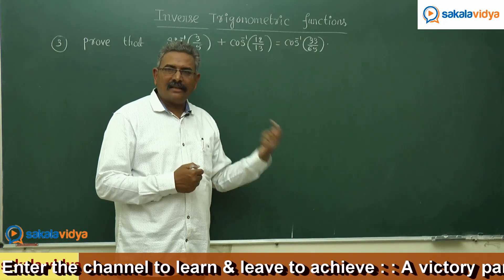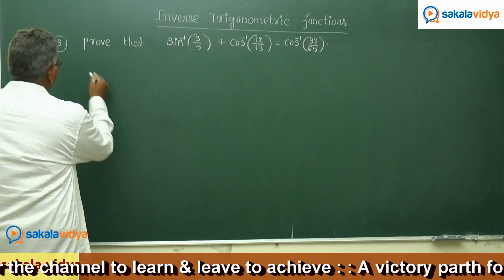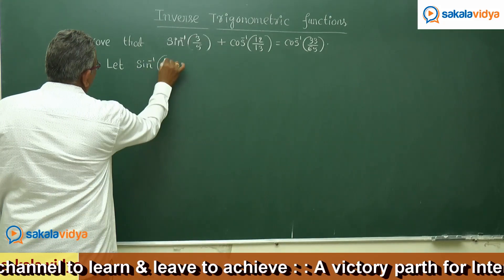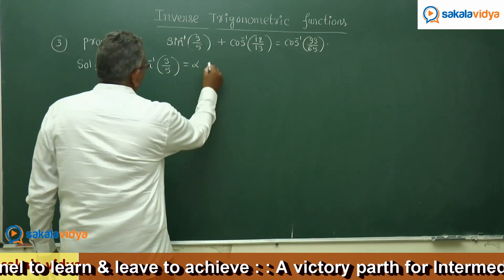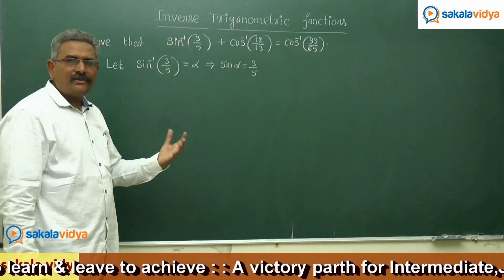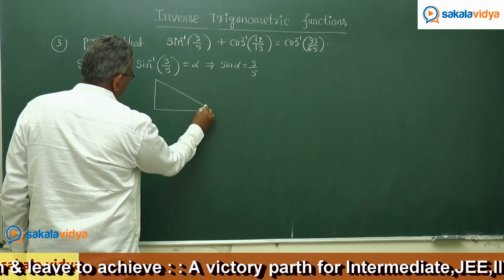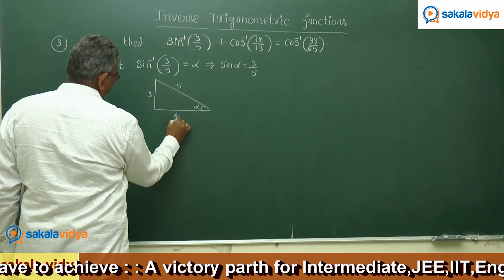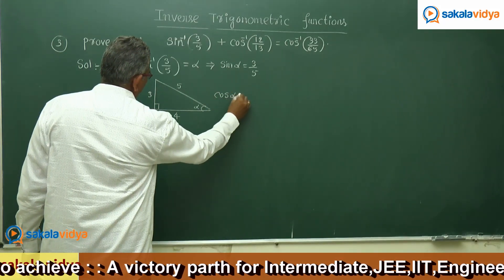Let us solve it now. Let us consider sin inverse of 3 by 5 equals alpha. That implies sin alpha equal to 3 by 5. We need to find cos alpha, so let us consider a right angle triangle containing angle alpha. Sin alpha equals 3 by 5 means this side is 3 and the hypotenuse is 5. Since 3, 4, 5 are Pythagorean triplets, cos alpha is equal to 4 by 5.